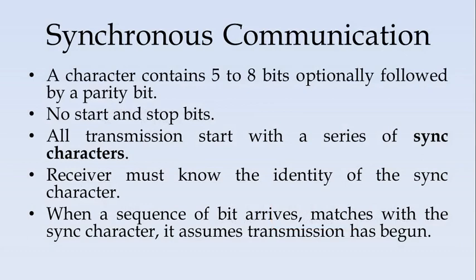In synchronous communication, a character contains five to eight bits followed by an optional parity bit, but there are no start bits or stop bits. Instead, all transmissions start with a series of sync characters, which are already agreed upon between the transmitter and the receiver. Whenever the sync characters are received, it indicates the start of transmission. The receiver must know the identity of the sync character — when a sequence of bits arrives and matches the sync character, it assumes that transmission has begun.